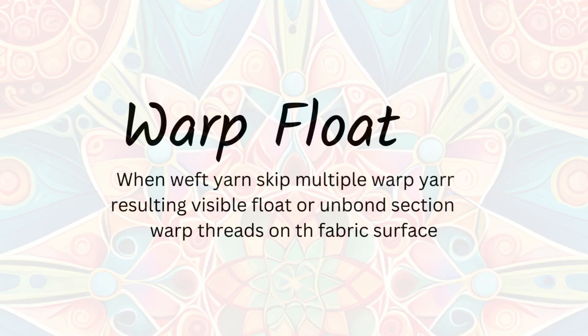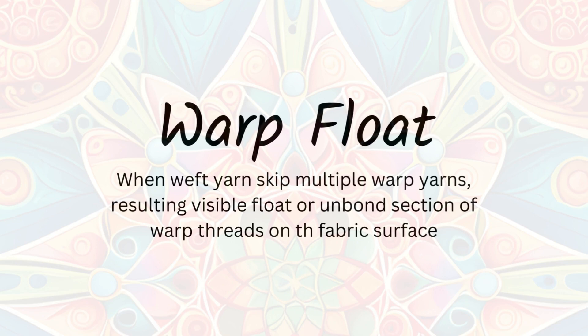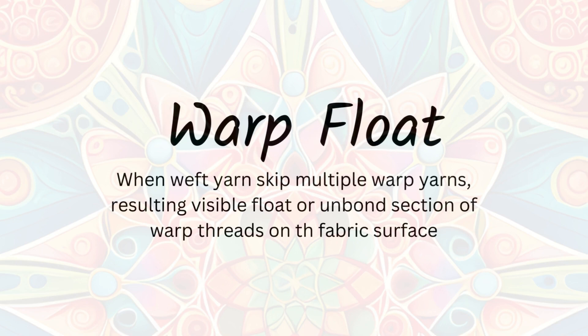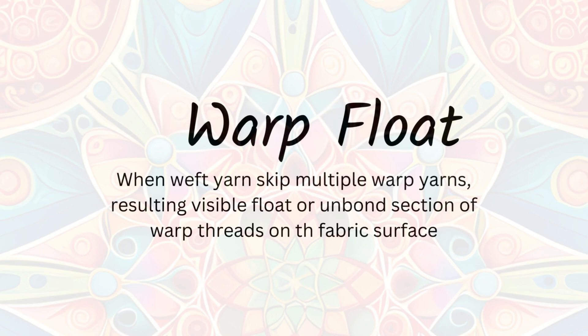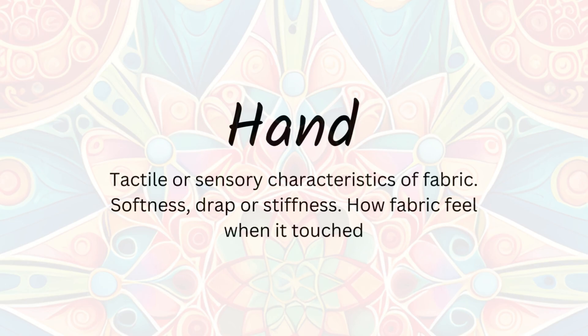Warp float: Weaving process mein jab weft yarn, warp yarn ke saath intersect karne ki bajaye warp yarn ko skip kar de, to iske result mein weft ke neeche warp yarn loose hoga — use warp float kehte hain. Warp float se fabric mein smooth or shiny patterns create kiye ja sakte hain, but excessive warp float fabric ki strength or stability ko kam kar sakta hai.